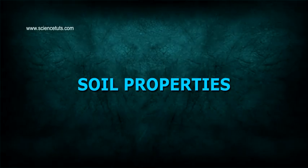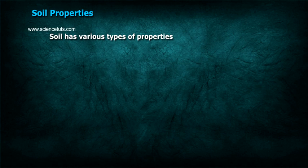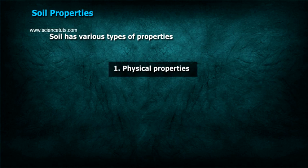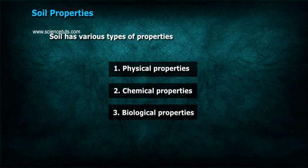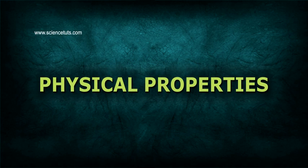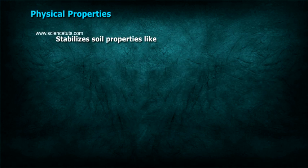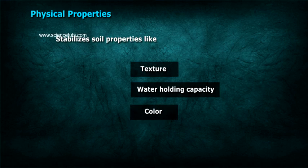Soil has various types of properties: Physical Properties, Chemical Properties, and Biological Properties. Physical properties include stabilizing soil characteristics like texture, water holding capacity, color, etc.